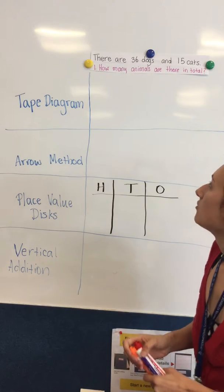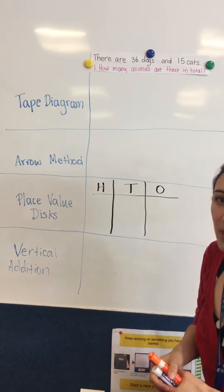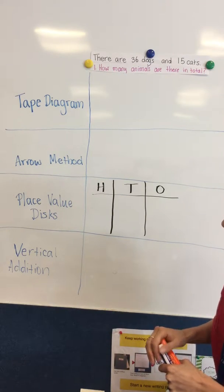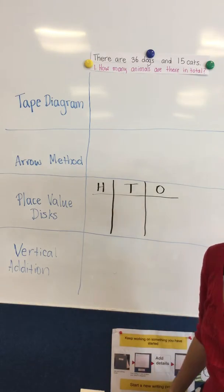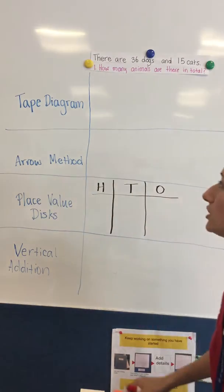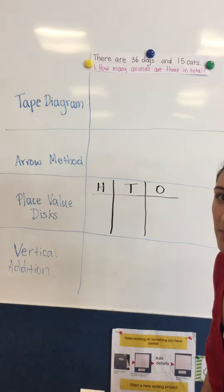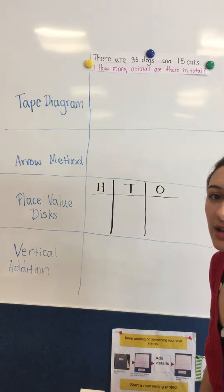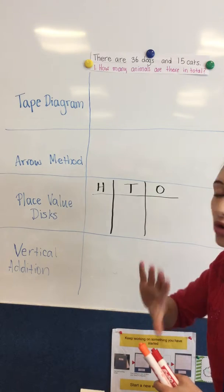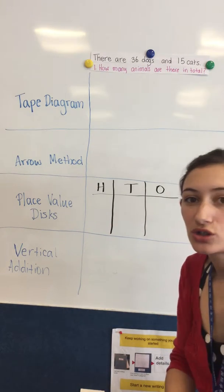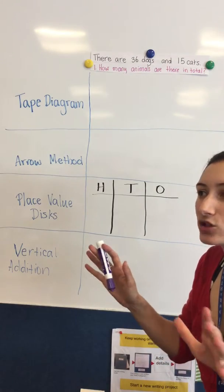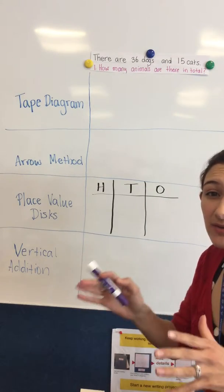So this is a fairly simple word problem: there are 36 dogs and 15 cats, how many animals are there in total? The first strategy is a tape diagram, and that's a really good way to show the problem. The way a tape diagram works is you just draw out the problem and represent numbers as if they were a piece of sticky tape.